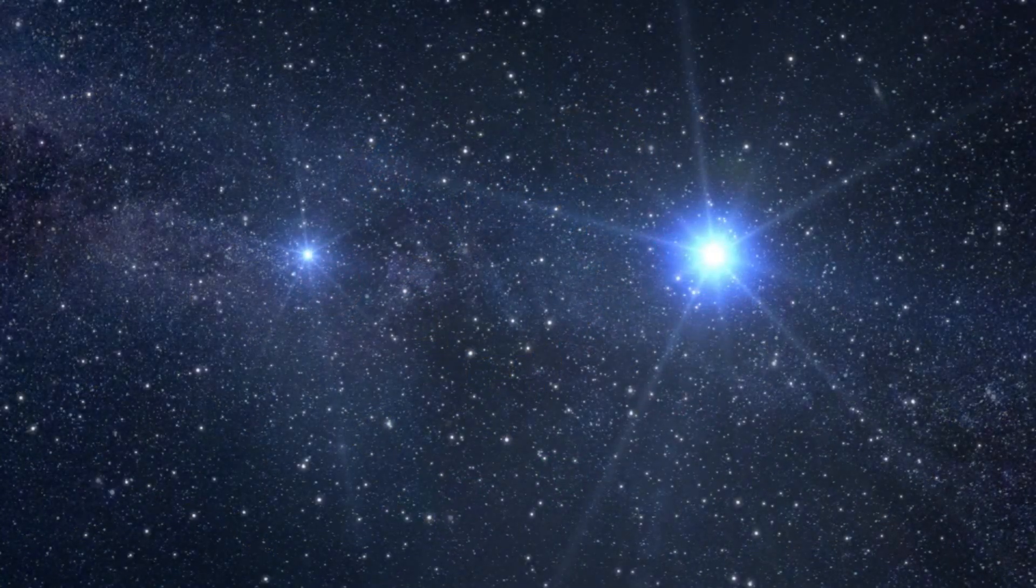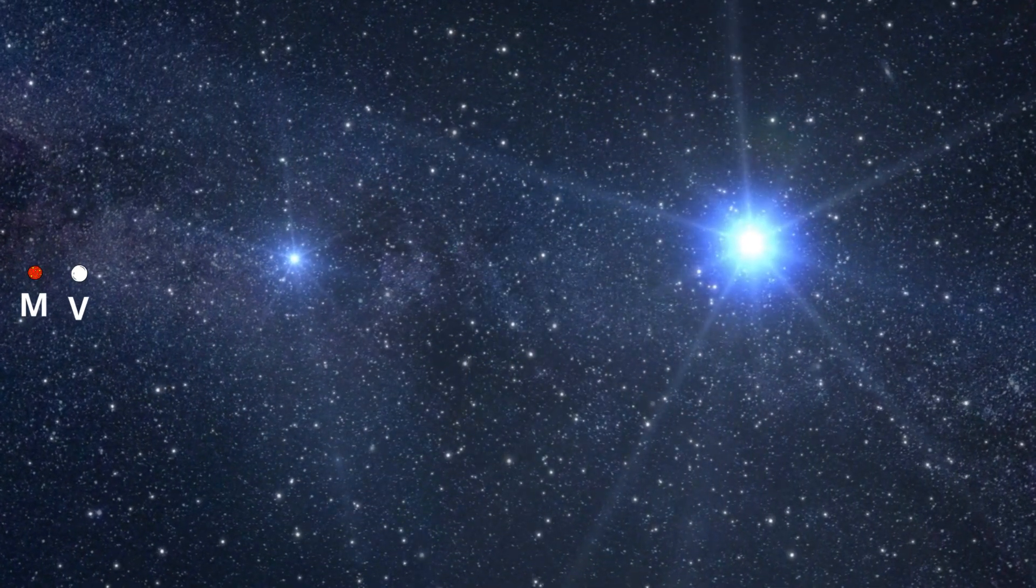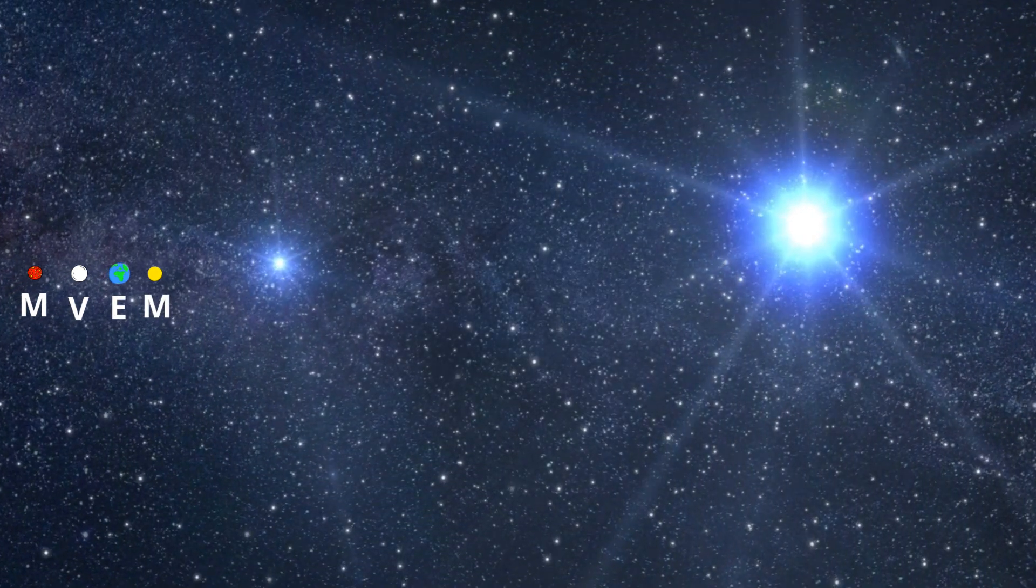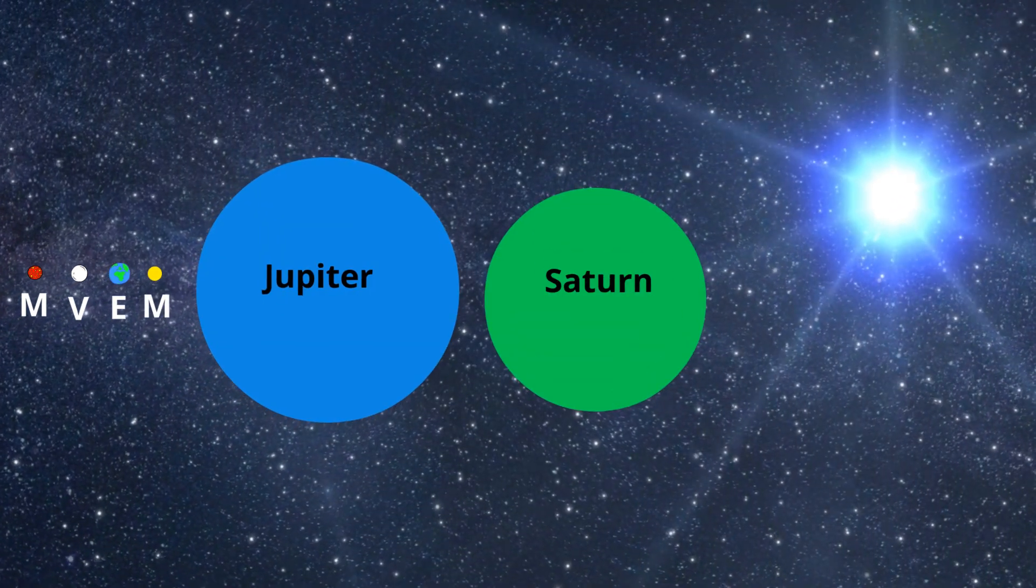And here are the planets: Mercury, Venus, Earth, Mars, Jupiter, Saturn, Uranus, and Neptune.